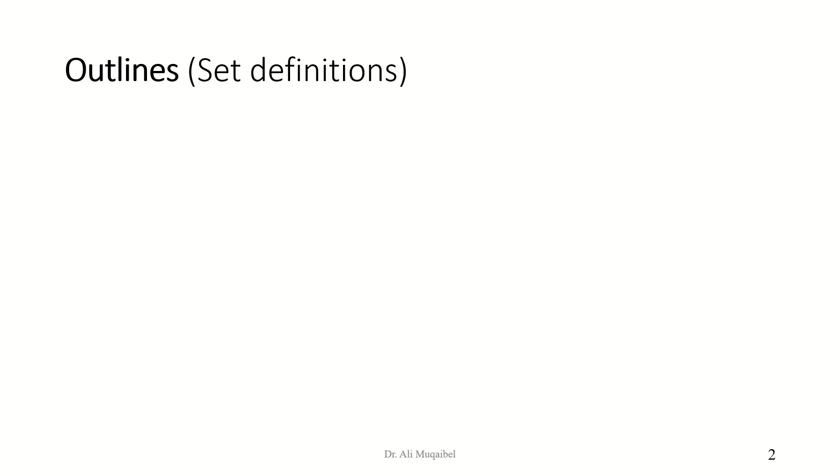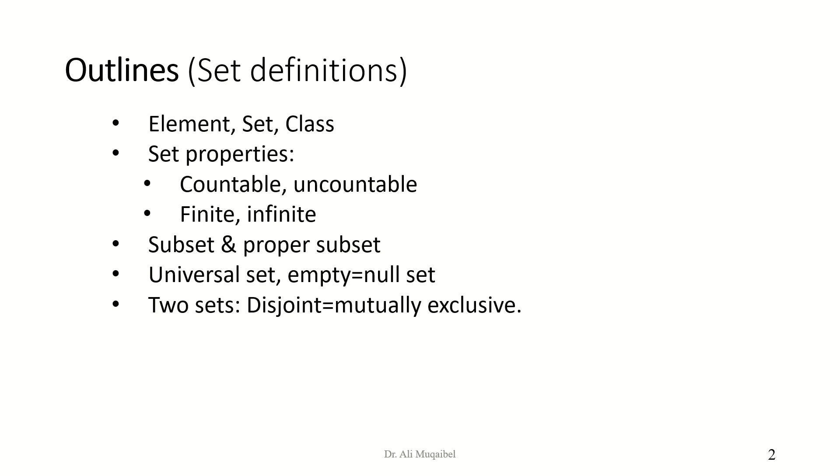The outline of our presentation will go like this. We'll start with defining the meaning of element, set, and class. Then we'll go on to some set properties, including being countable, uncountable, finite, or infinite. We'll go on to subsets and the proper subset. We'll define universal set and empty set. And we'll conclude with when do we call two sets as being disjoint or mutually exclusive.